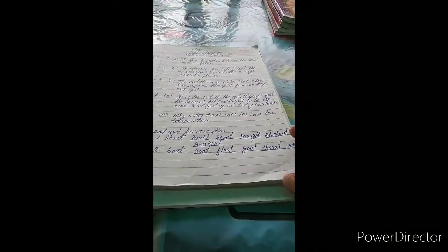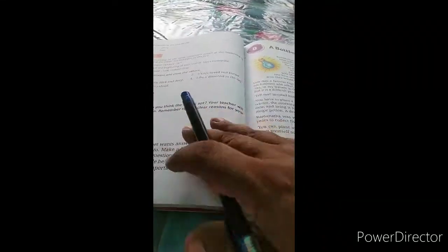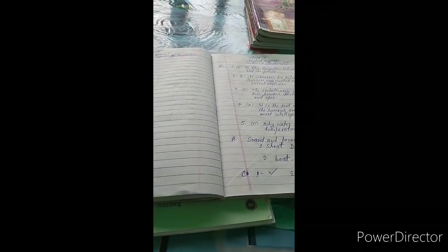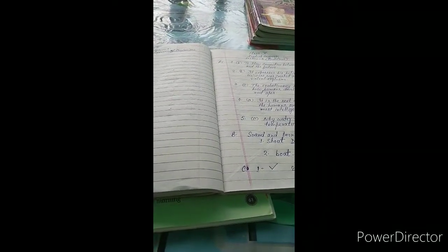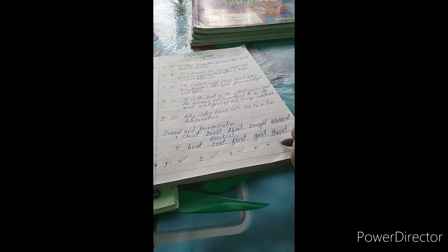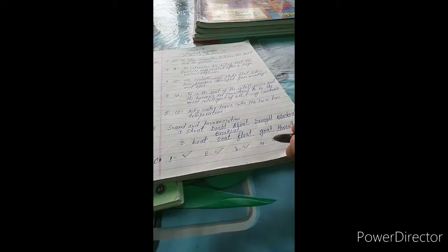For alliteration appreciation: first example we tick, second example we tick, third we will tick, fourth we will cross, fifth we will cross.